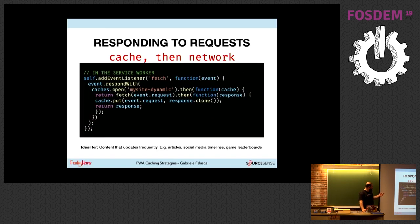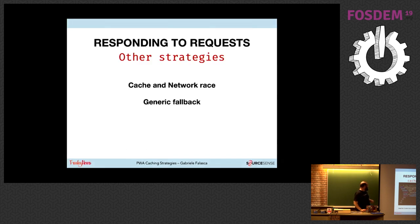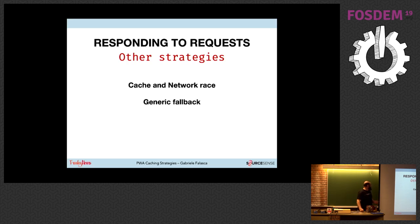Cache-then-network is ideal for content that updates frequently, such as social media timelines. Other less common strategies include cache-network race and generic fallback. Generic fallback is the classical error page — 'I don't have the data, sorry.' Cache-network race is for very specific situations where the device has extremely slow disk access, so you start both the cache call and network call simultaneously and use whichever result wins the race.